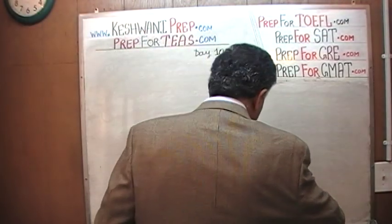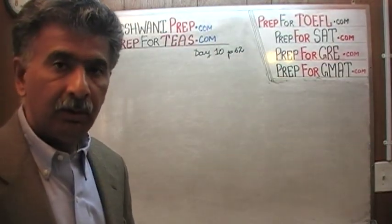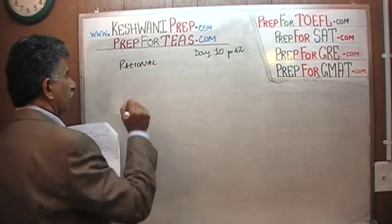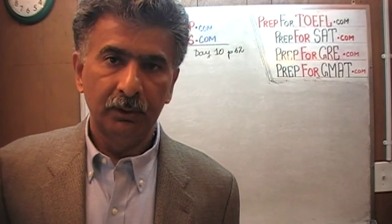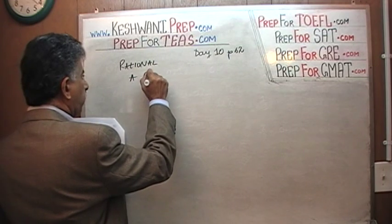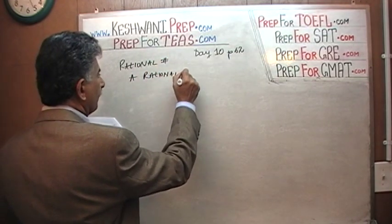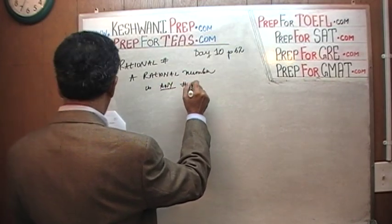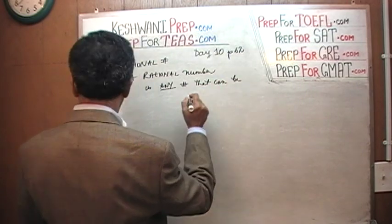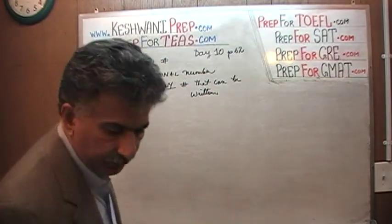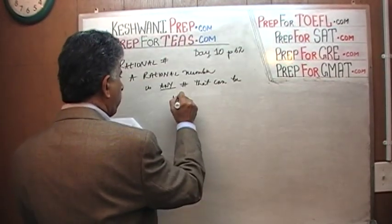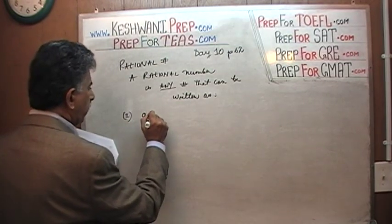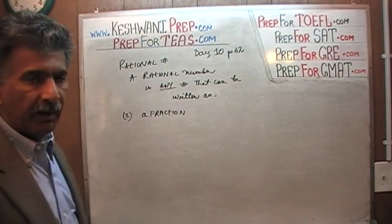Today we'll deal with the notion of rational versus irrational numbers. So let's first talk about what makes a number rational. A rational number is any number that can be written as a fraction. If you can write it as a fraction, then that's a rational number.